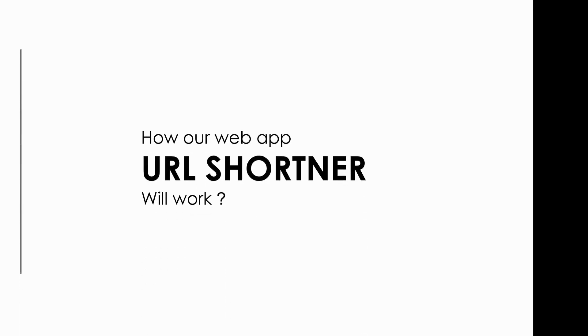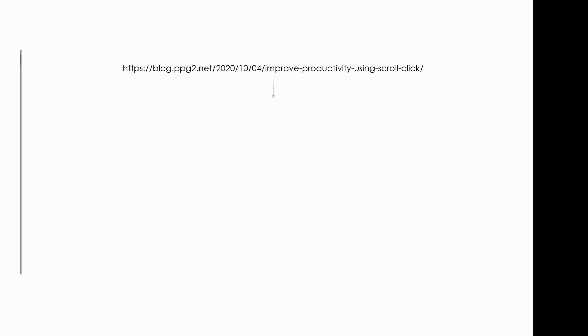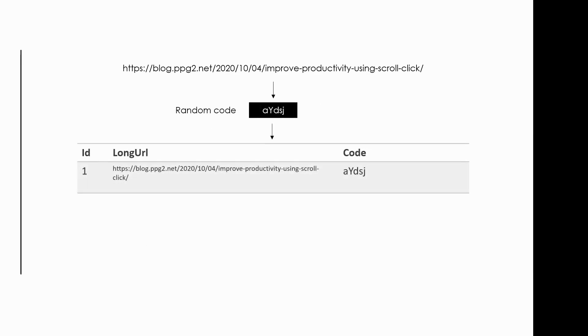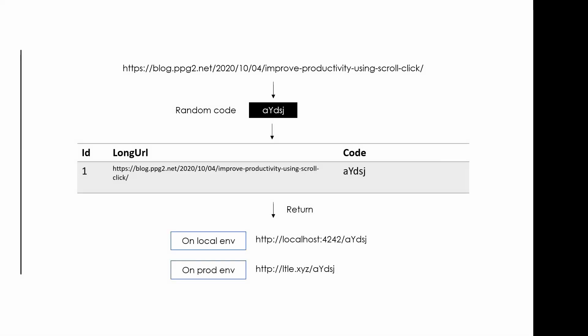Let's see how our web app will work. First, the user is supposed to enter a long URL into our web app. Our web app will generate a random and unique code, then the long URL and the randomly generated code can be stored into the database. Finally, the web app can return a short URL as our web app URL with the appended short code.